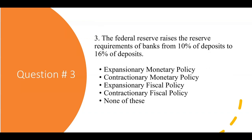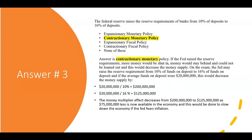Number three: the Federal Reserve raises the reserve requirements of banks from 10 percent of deposits to 16 percent of deposits. By raising the reserve requirements, banks are going to have to keep more money in — more money stays behind and can't be loaned out. This decreases the money supply, making it contractionary monetary policy.